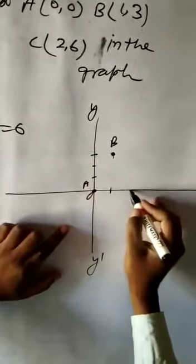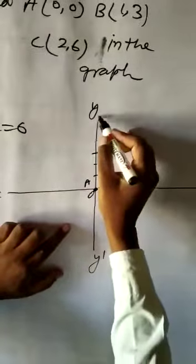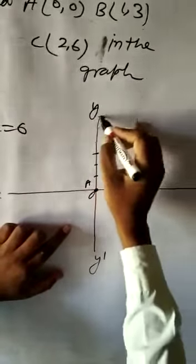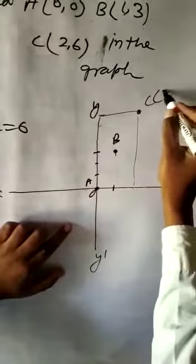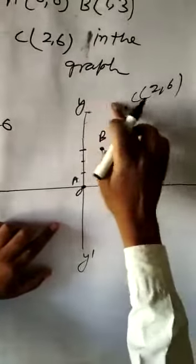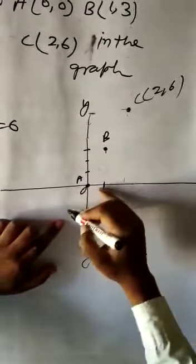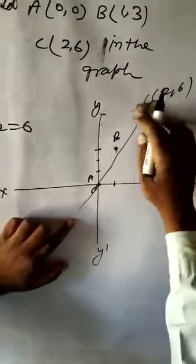C 2. Y 3 4 5 6. This is C 2 comma 6. A B C. Draw a straight line.